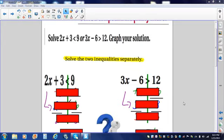Let's do an example of a compound inequality with the word OR. Please write down 2x plus 3 is less than 9. Write the word OR. 3x minus 6 is greater than 12. Just like we've done in our previous podcast, we're going to solve the inequalities like they were an equation. So, I'm going to solve the two inequalities separately.